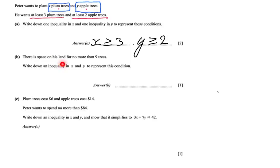We continue. There is space on this land for no more than nine trees. No more than nine trees, so ten trees wouldn't fit, it's just too small. So nine is okay or eight or seven or six or one tree, that's all fine. Write down an inequality in X and Y to represent this condition. So now we are talking about a one point question, one inequality in X and Y.